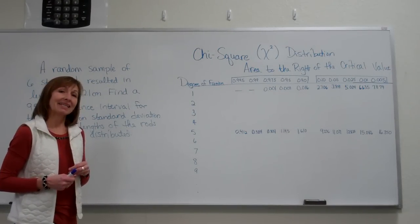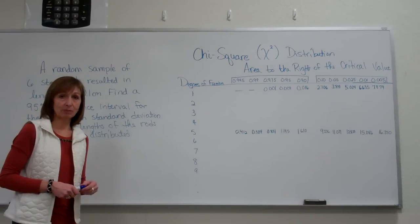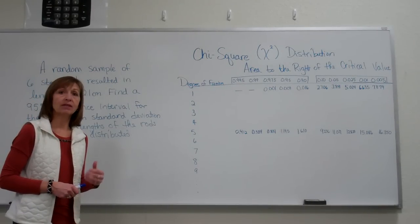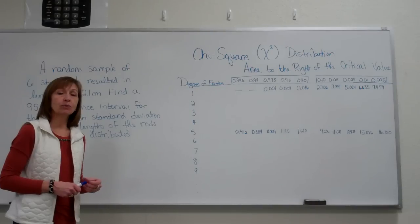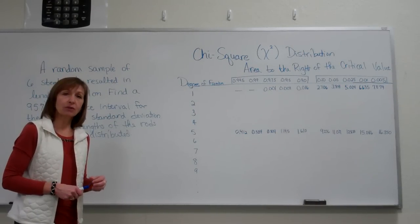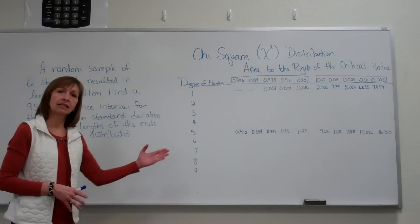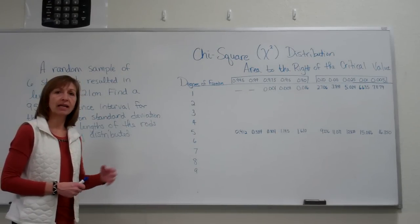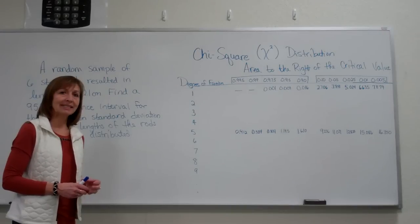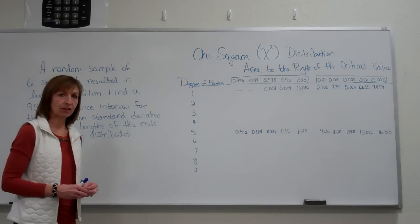With the chi-square distribution, we don't have symmetry, and our chi-square values are always positive. So we need to make sure that we make the adjustment when we're asked questions that utilize the chi-square distribution, keeping track of those changes that occur.